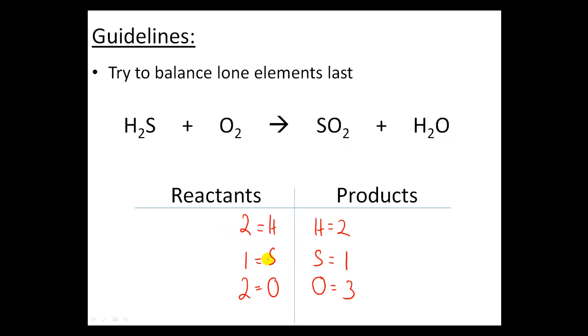Alright so let's start off with the sulfurs. They're all balanced, fantastic. Leave oxygen for last, let's try hydrogen. Okay that one's also balanced. So I have oxygen that needs to be balanced. Whenever I see a 2 and a 3 the number you should be thinking of is 6.